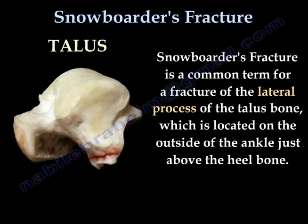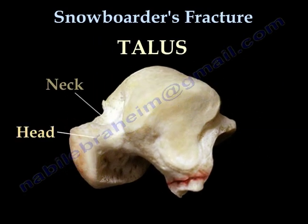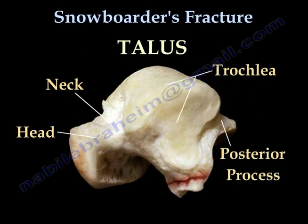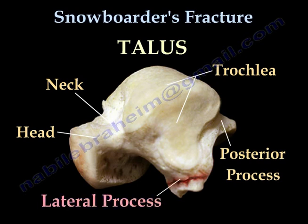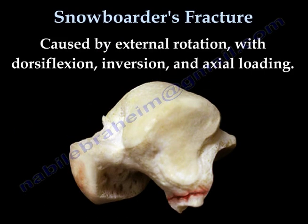The anatomy of the talus includes the talar head, the neck, the trochlea, the posterior process, and the lateral process. Fracture of the lateral process is caused by external rotation with dorsiflexion, inversion, and axial loading.